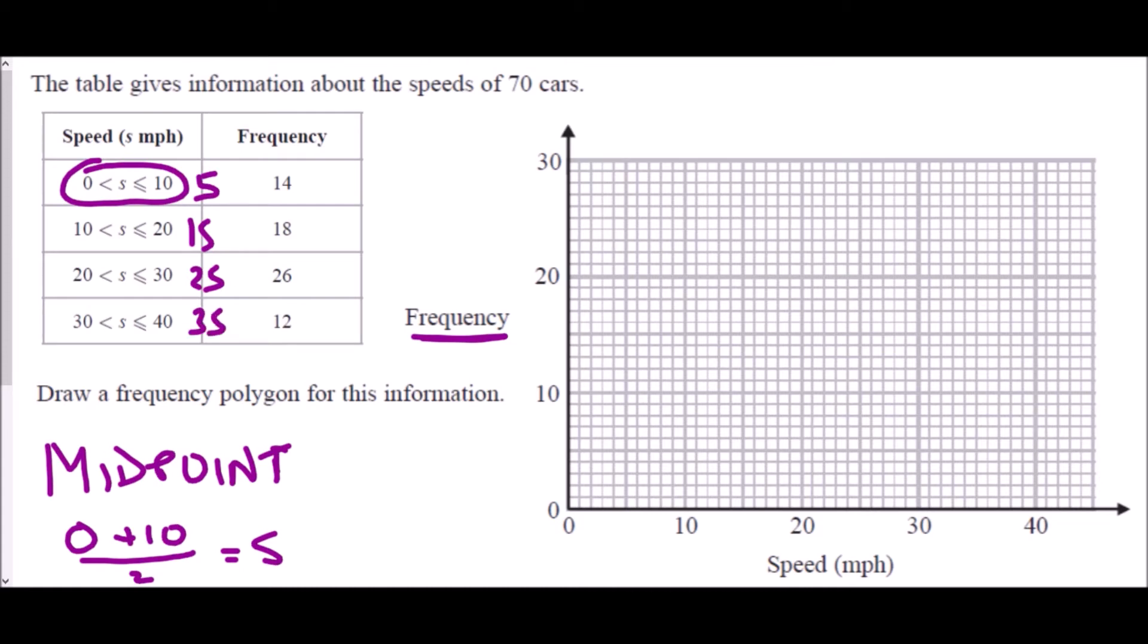And so when we come to plot those points, the first thing is we need to find the midpoint of the group. So the first one is 5 with a frequency of 14, so we go to 5 and we go up to 14 on the graph and we just draw ourselves a little cross. Next we want to go from 15 up to 18 and draw a little point. We want to go from 25 all the way up to 26 and again mark a little cross, and from 35 we want to go up to 12 and mark it with a little cross.